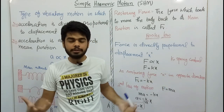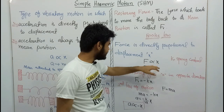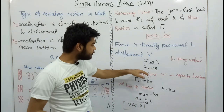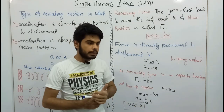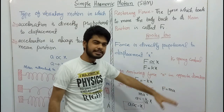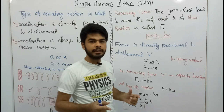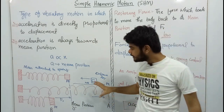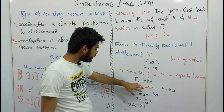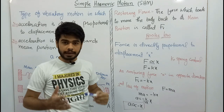The restoring force is directly proportional to x. When we remove the proportionality sign, we introduce a constant which we call the spring constant k. The value of k depends on the stiffness of the spring. Now the restoring force acts in the opposite direction to x, so we give it a negative sign: restoring force equals minus kx.